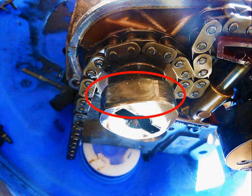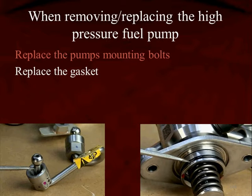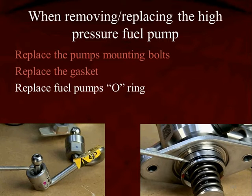These photos come from a vehicle with GDI that had an extended crank. When working with the fuel pump — taking off, putting on, or replacing it — always replace the fuel pump mounting bolts; don't reuse them. Replace the gasket and the O-ring. The arrow in the lower right-hand corner is pointing to that O-ring, which must be replaced every time you take the pump off and on.